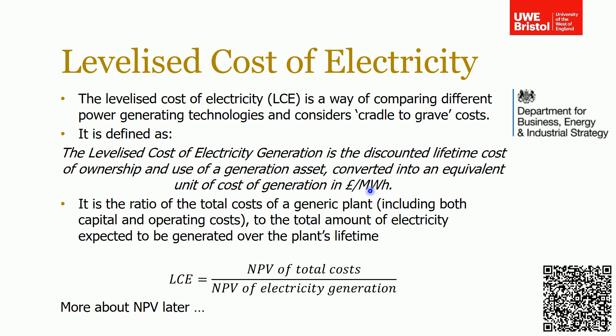In other words, it's the ratio of the total costs of a generic plant — be it coal, gas, nuclear, etc. — including all the capital and operating costs, which we'll talk about in another lecture on life cycle costs. It's a ratio of all these costs to the amount of electricity that the plant is expected to generate over its lifetime.